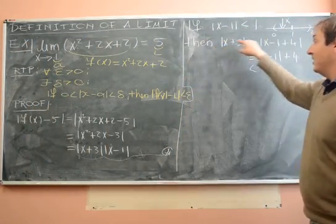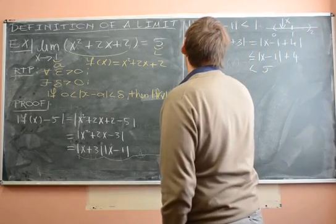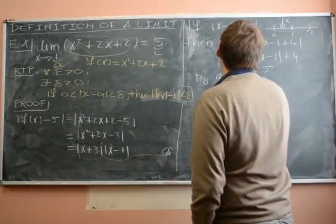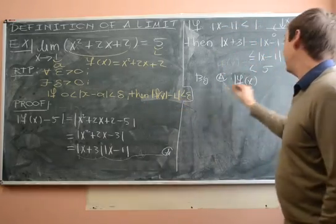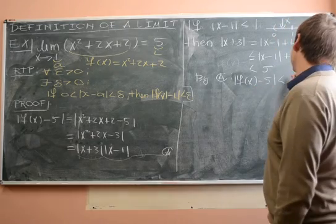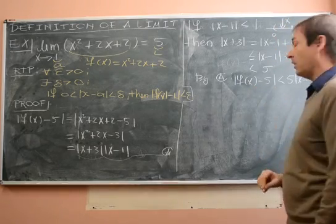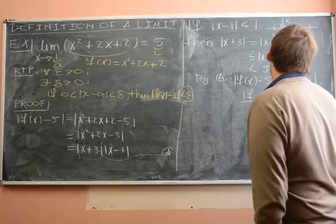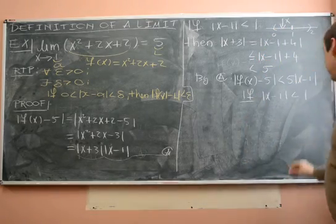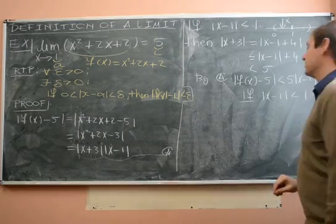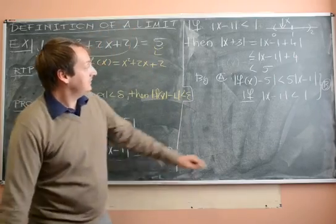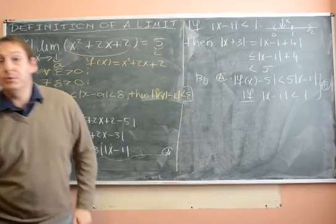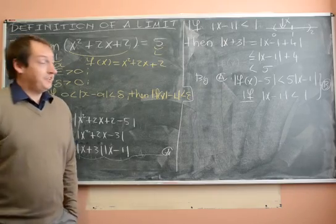By this calculation — Equation A — we see that |f(x) − 5| = |(x + 3)(x − 1)| is less than 5|x − 1|, but only under the restriction that |x − 1| < 1. Let's call this inequality B. This inequality isn't always true — it only holds when |x − 1| < 1, and that's important because it tells us how to pick our delta.